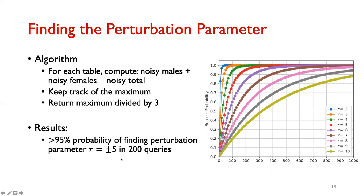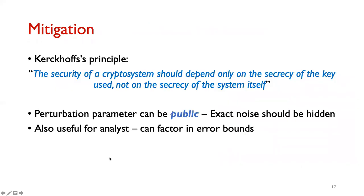The results show that with greater than 95% probability, we can find the hidden perturbation parameter of plus or minus five in about 200 queries, and fewer queries are required for smaller perturbation parameters. The mitigation is simple: just release the perturbation parameter. This follows Kerckhoffs's principle that security should depend only on the secrecy of the key, not the secrecy of the system itself, and would also help analysts by allowing them to factor in error bounds.